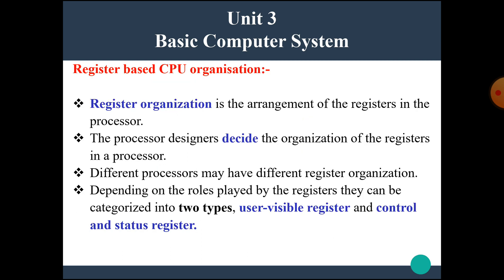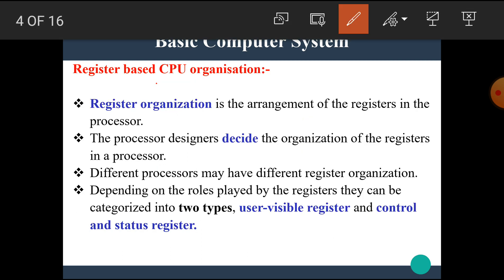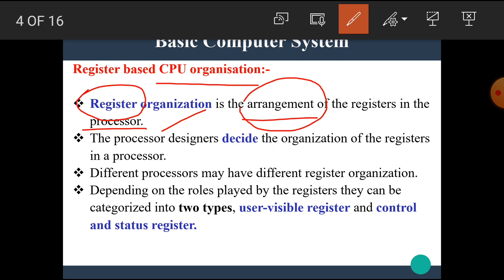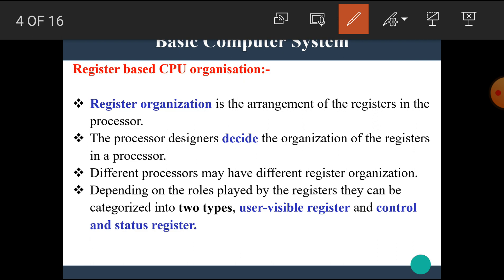Now in this video, we are going to see the register-based CPU organization. The register organization is the arrangement of the registers in the processor. We know that the register is a temporary storage memory and the registers are used to hold the data address during the running program. The register organization is the arrangement of these registers in the central processing unit or processor, and the processor designers decide this organization.